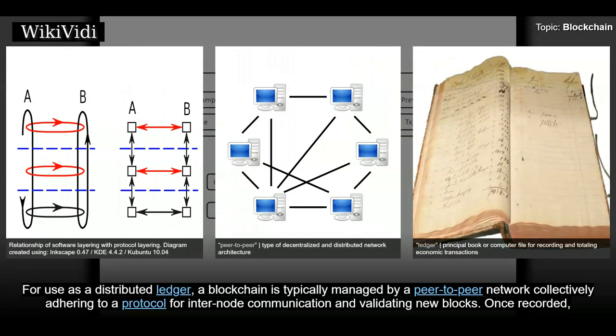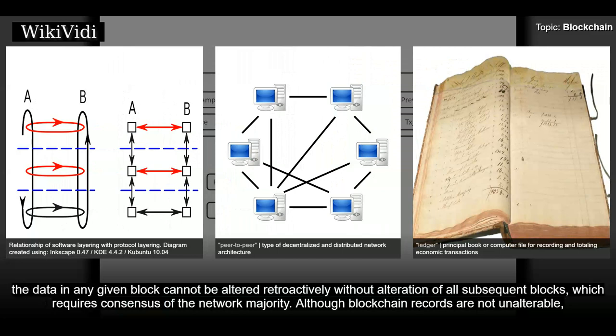For use as a distributed ledger, a blockchain is typically managed by a peer-to-peer network collectively adhering to a protocol for inter-node communication and validating new blocks. Once recorded, the data in any given block cannot be altered retroactively without alteration of all subsequent blocks, which requires consensus of the network majority.